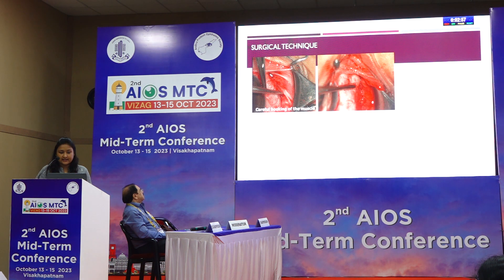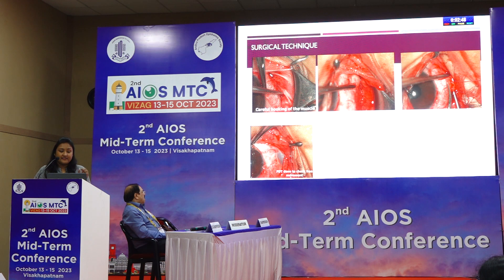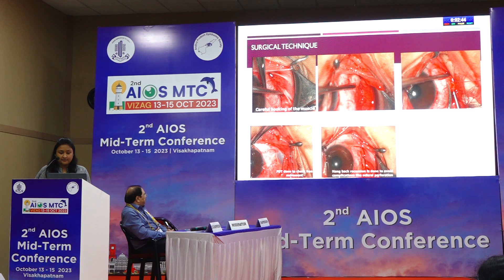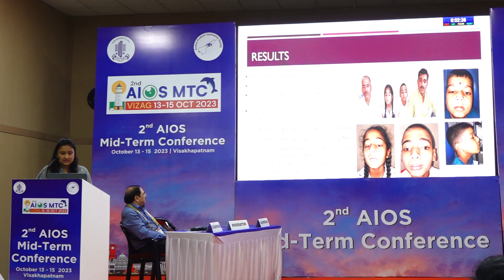This was the surgical technique — carefully hooking the muscles. As you can see, the muscle is very fibrosed and posteriorly inserted in these cases. Careful suturing and cutting was done. FDT was performed along every step to ensure that the eye is free. Then a hangback recession was done to avoid complications like scleral perforation for large recessions in some of our patients.